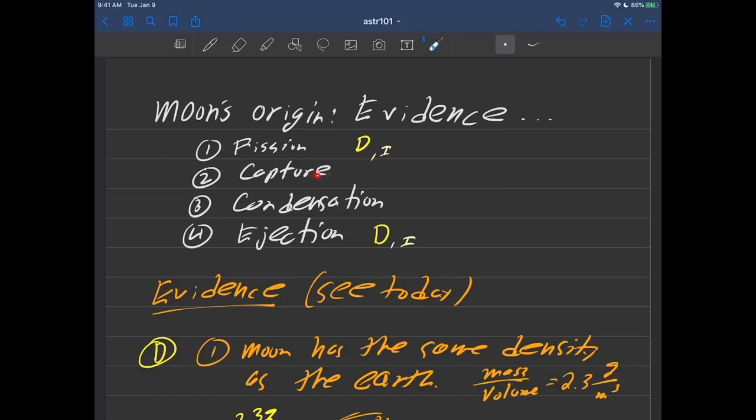Capture doesn't seem to hold up because capture means earth just captured something gravitationally that was passing by. That definitely wouldn't make a crater. Condensation doesn't make craters, but ejection does make a crater so we'll go ahead and put a P right here. Seems like the Pacific Island being a crater does support the ejection hypothesis that something slammed into the earth, made that crater, then flew off into space and that's where the moon came from. Okay.